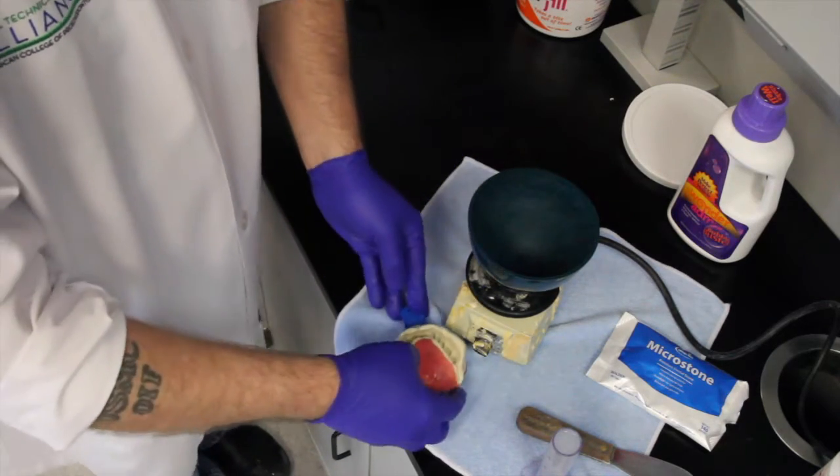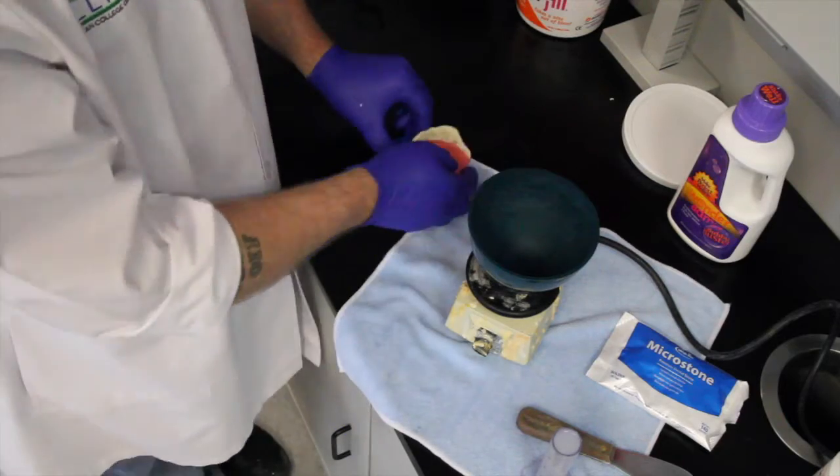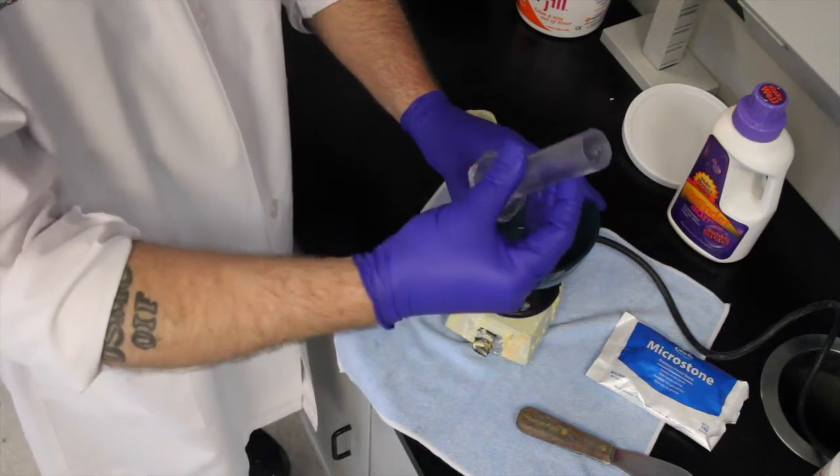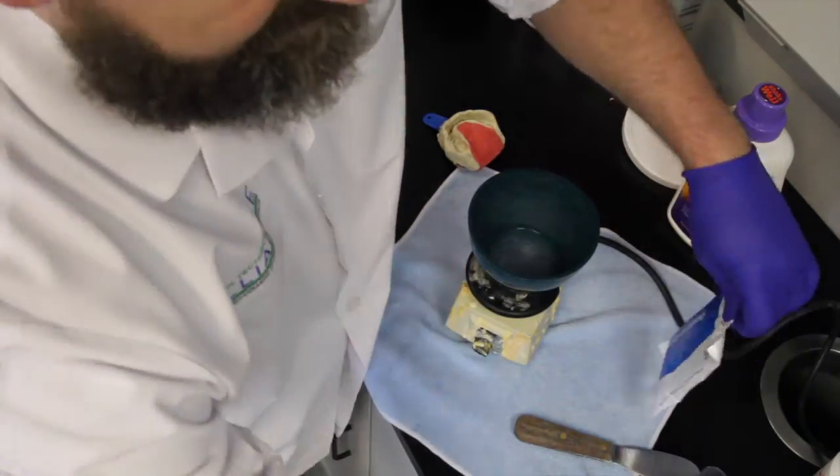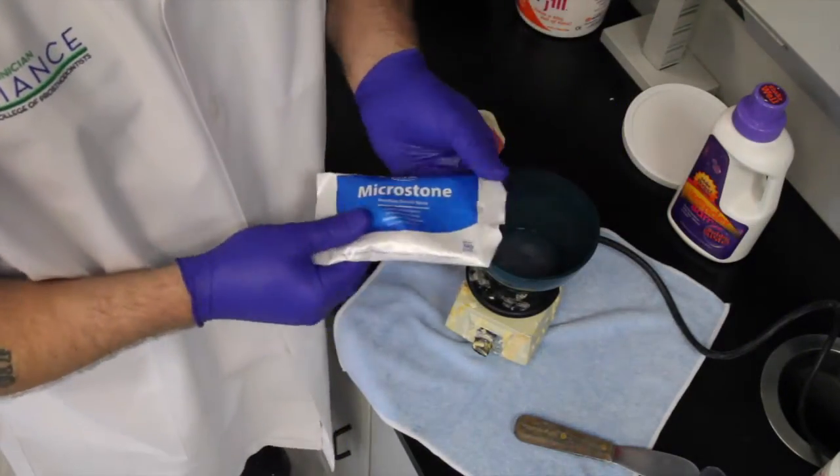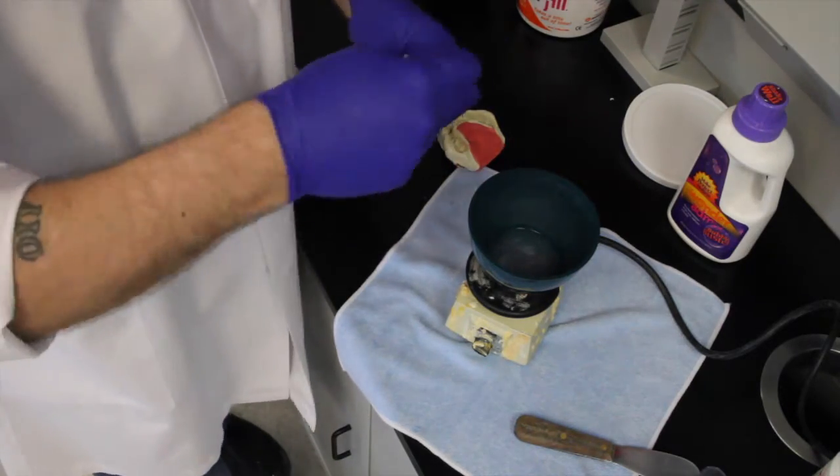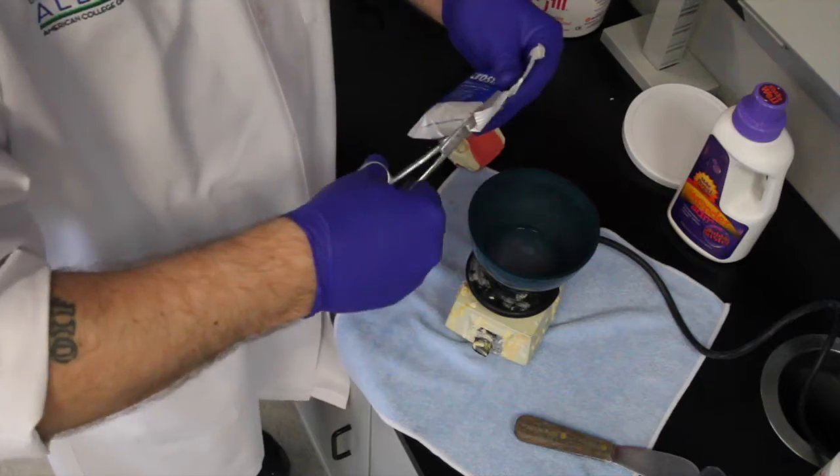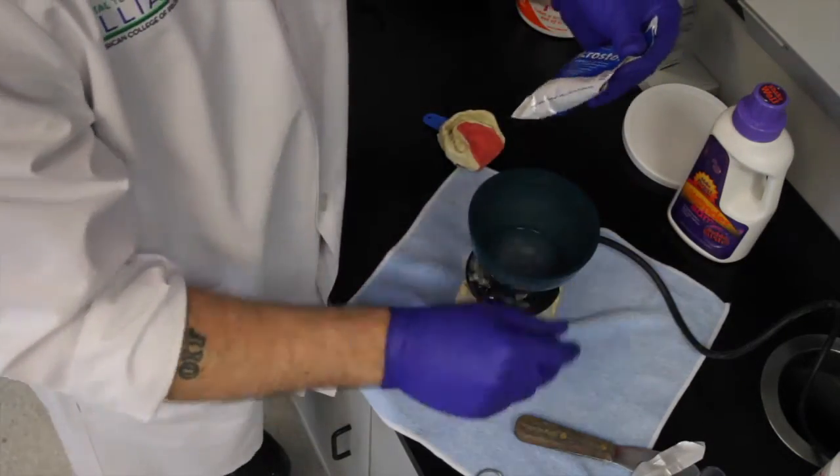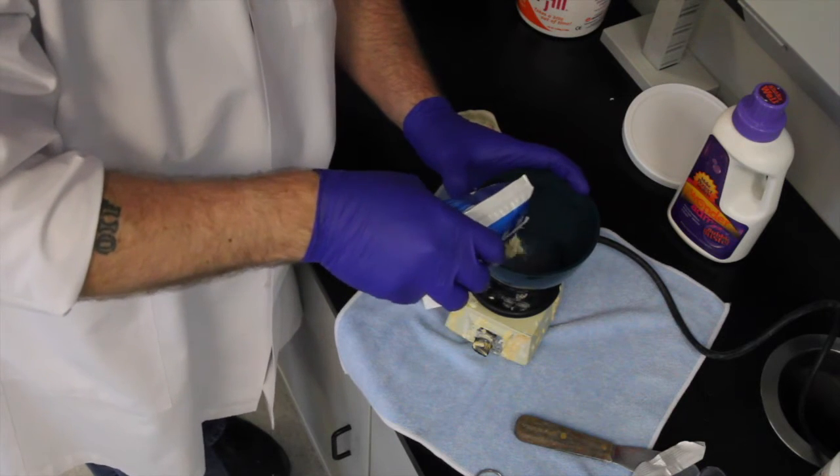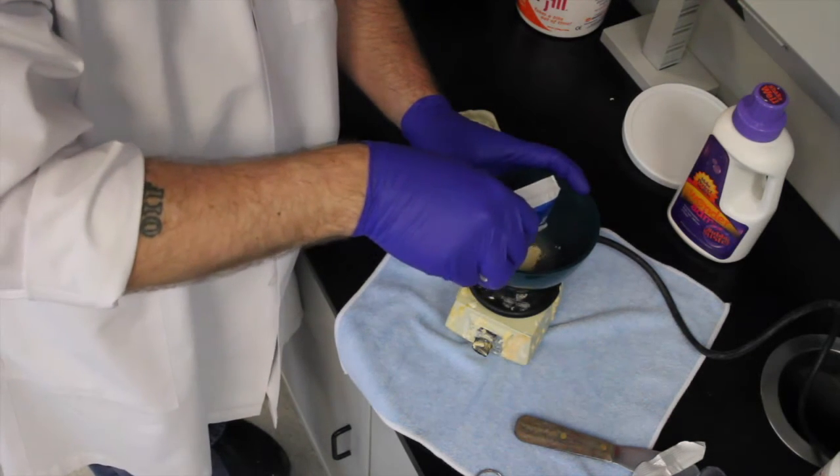So now we're going to add our admix into the bowl. 41 milliliters. And once again, we're going to be using the MicroStone from Whitmix. Shake all the powder to the bottom of the bag. All I like to do is cut the top of the bag off. And then slowly add the powder into the liquid, the admix.